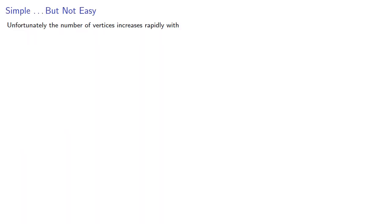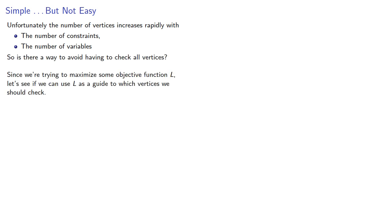Unfortunately, the number of vertices increases rapidly with the number of constraints and the number of variables. So is there a way to avoid having to check all the vertices? Since we're trying to maximize some objective function L, let's see if we can use L as a guide to which vertices we should check.